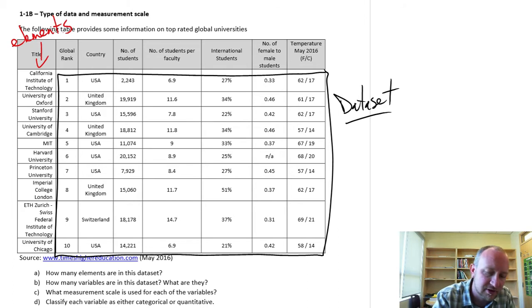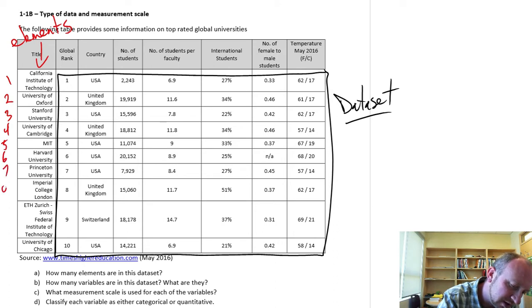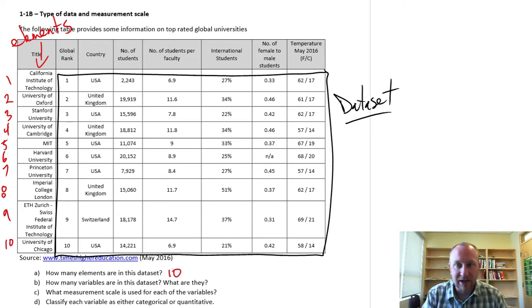And so these universities constitute our elements of this data set. So how many universities are there? I have one, two, three, four, five, six, seven, eight, nine, and finally ten elements. So we have information on ten elements, ten universities.